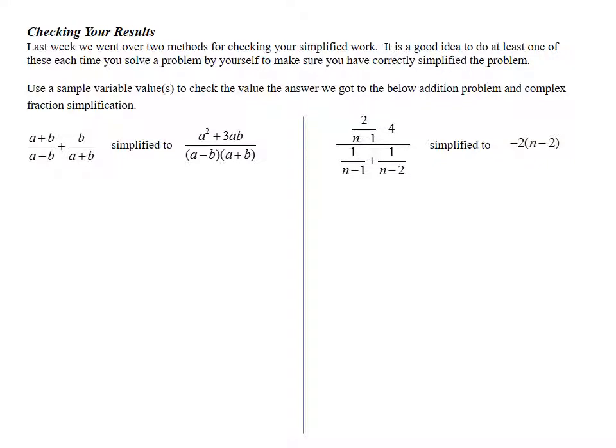It's always important if you don't have access to answers to check your results in some way to make sure you confirm that what you've gotten from simplifying two rational expressions is indeed the correct result. We can do that numerically by plugging values in or we can do it graphically. I want to look at two examples from the last page in the notes where we check our answers numerically first.